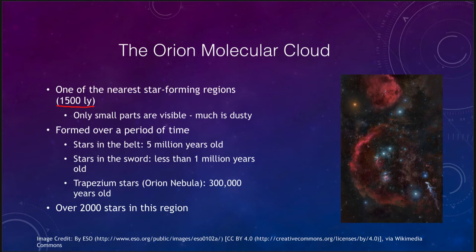You may recognize the outline of Orion — there is Orion's belt, the sword which is the Orion Nebula coming down, and some of the bright stars Betelgeuse and Rigel that make up part of the body of the hunter.